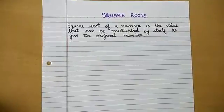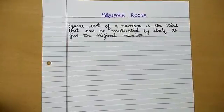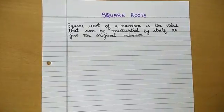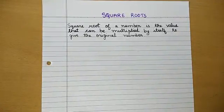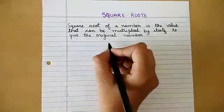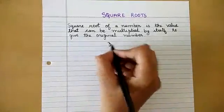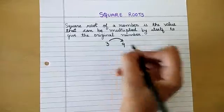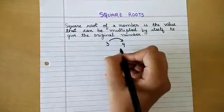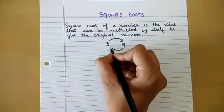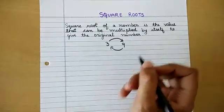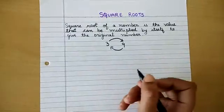Today we are going to learn about square roots. The square root of a number is the value that can be multiplied by itself to give the original number. For example, the square of 3 is 9, and the square root of 9 is 3. So we can say that square root is the opposite of exponents.